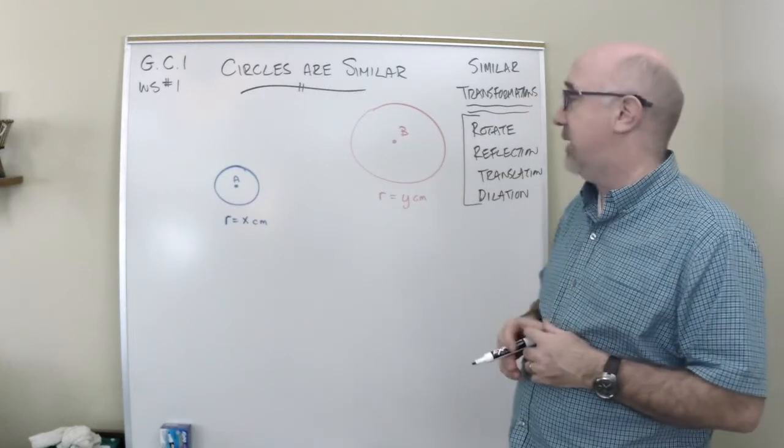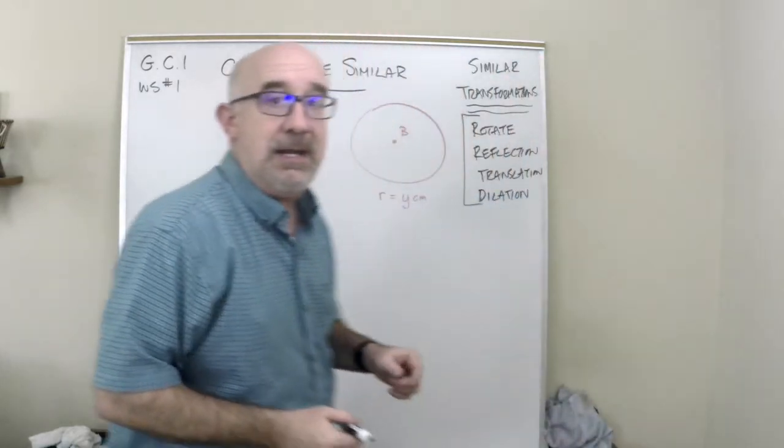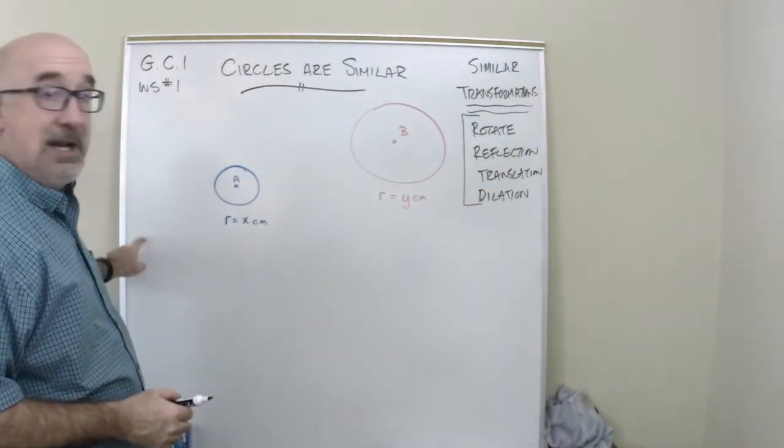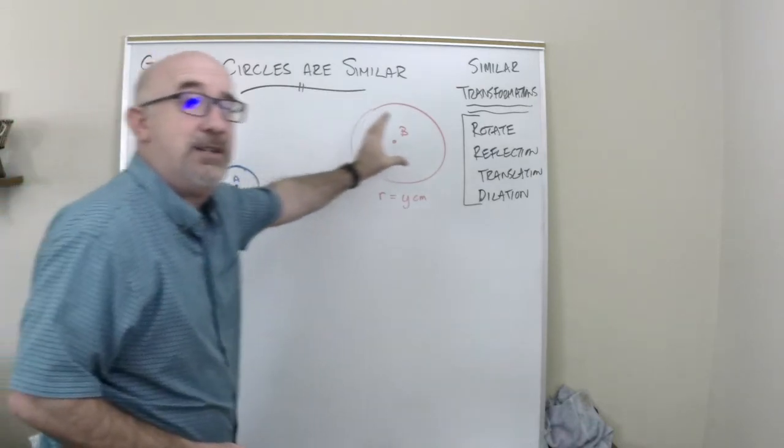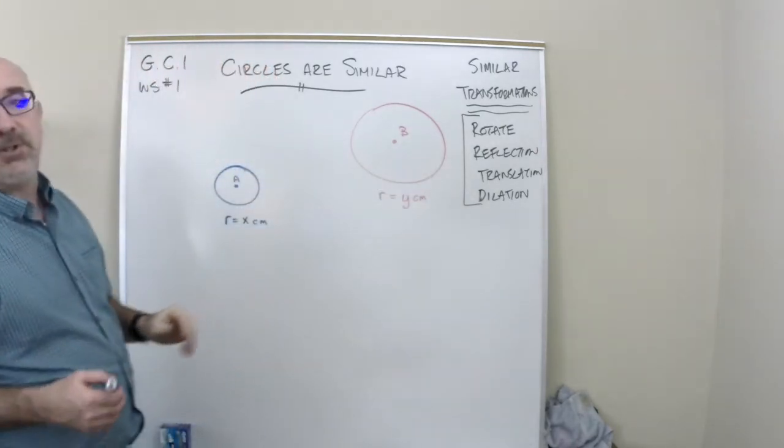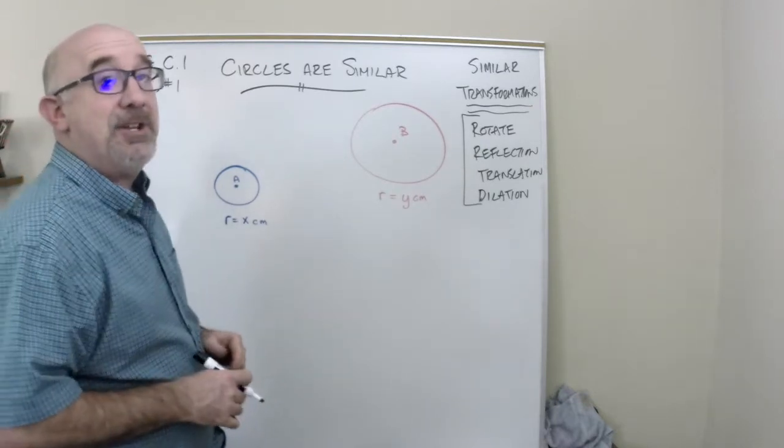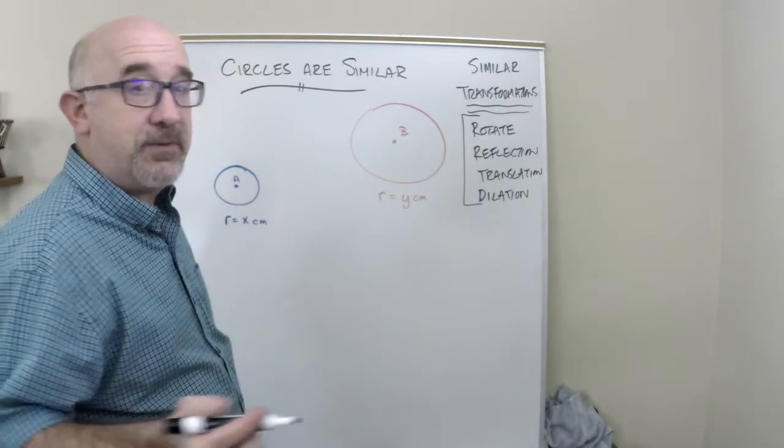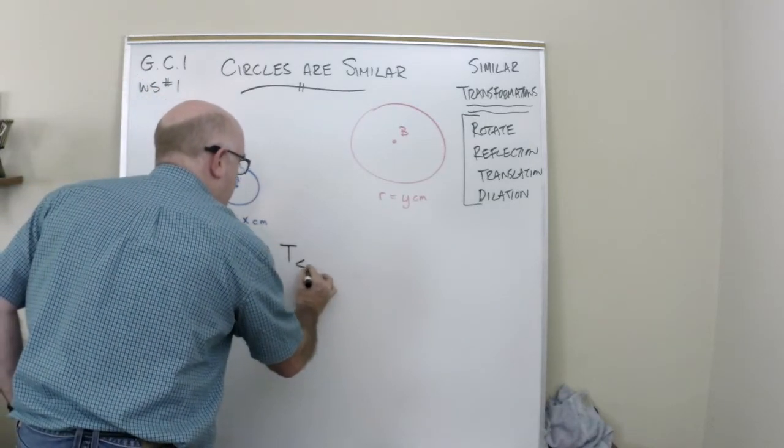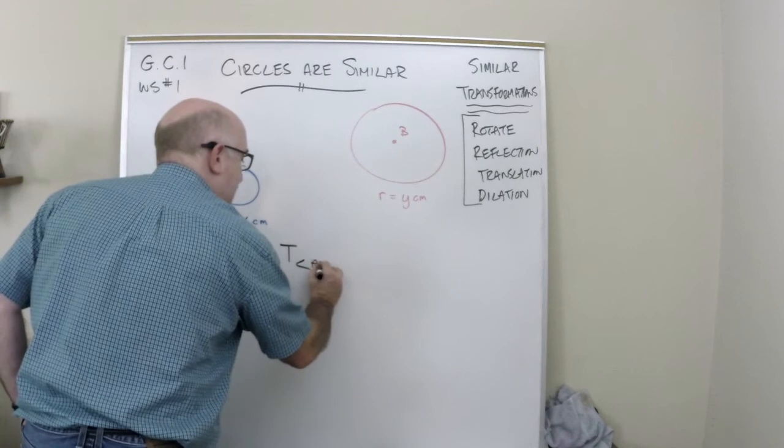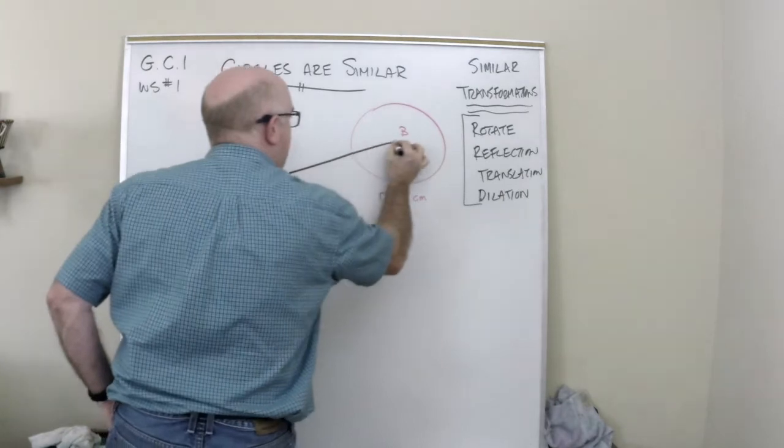Now, there are different ways to do this. You can maybe see that I could find a center of dilation out here and dilate this guy onto that guy. It's doable that way for sure. A way I'll show you that might be a little bit simpler is to do two transformations. So maybe first we translate by vector AB. In other words, let's slide this guy over to here.